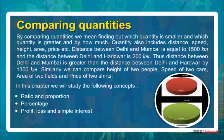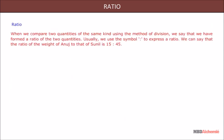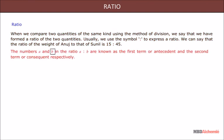percentage, profit, loss, and simple interest. Ratio: when we compare two quantities of the same kind using the method of division, we say that we have formed a ratio of the two quantities. Usually we use the symbol shown here to express a ratio. We can say that the ratio of the weight of Anuj to that of Sunil is